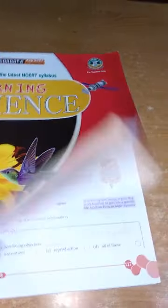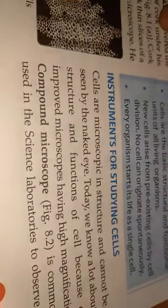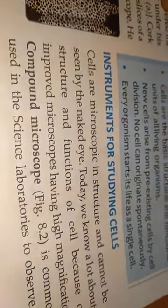Yesterday I discussed about the discovery of cell and the cell theory proposed by two German biologists. So today I am going to discuss about the instruments for studying cells. Cells are microscopic structures and cannot be seen by the naked eye.